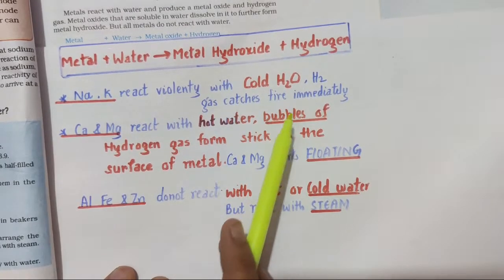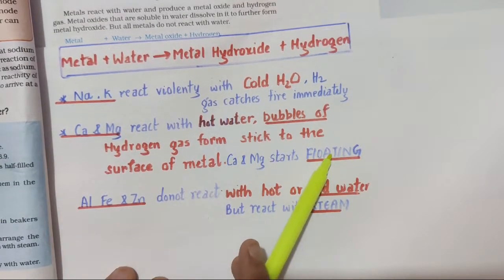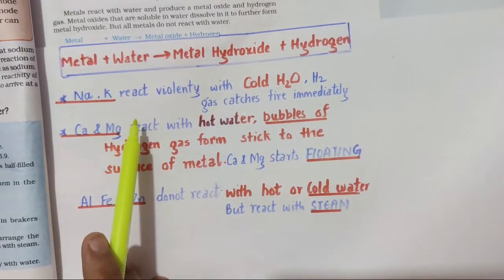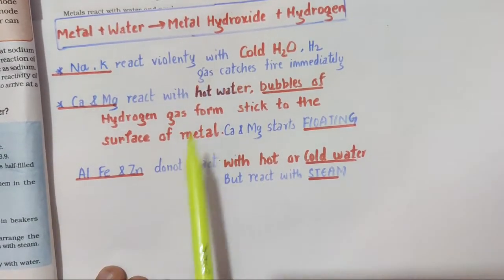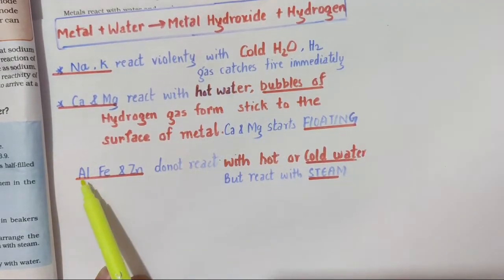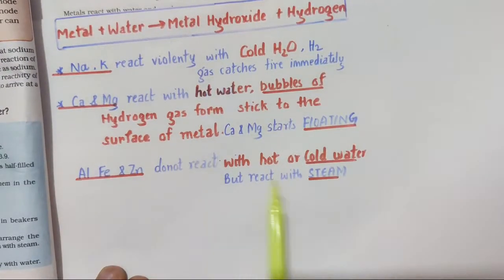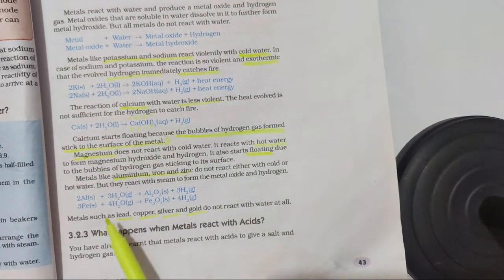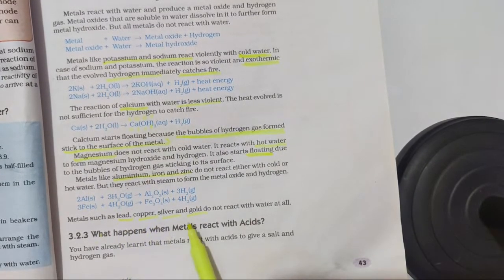Second: calcium and magnesium react with hot water. The hydrogen gas bubbles formed stick to the surface of the metal, causing it to float. Which metals float? Calcium and magnesium. Third: aluminium, iron, and zinc do not react with cold or hot water; they react with steam only — that reaction is important. Last: lead, copper, silver, and gold do not react with water at all.